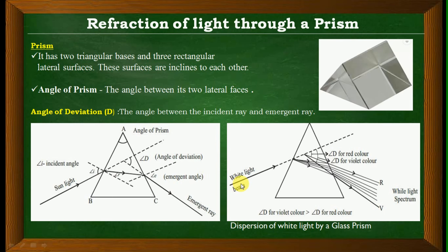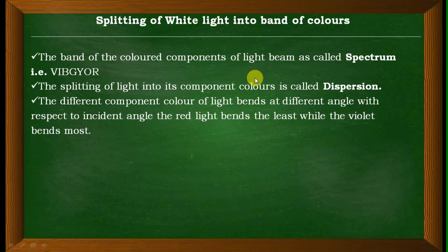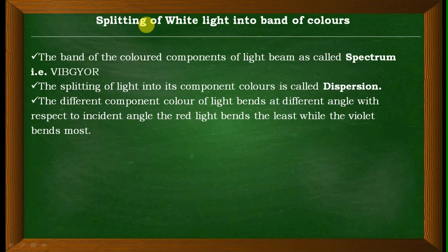This is called dispersion of white light by a glass prism. A single light disperses into seven colors — the rainbow colors: violet, indigo, blue, green, yellow, orange, red. The band of colored components of a light beam is called the spectrum. The splitting of light into its component colors is called dispersion — just like a group dispersing from a single line into different places.